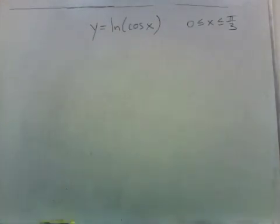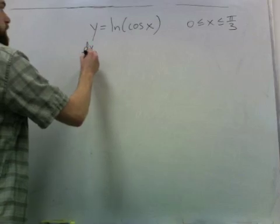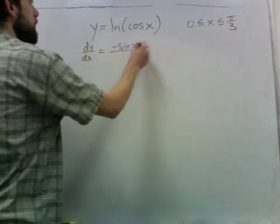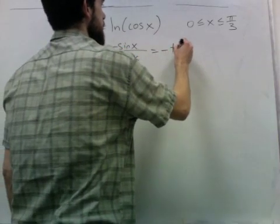Now let's figure out the arc length of this, as x goes from 0 to pi over 3. So first we figure out the derivative. The derivative of the inside is negative sine, over the inside is cosine. This gives us a negative tangent.